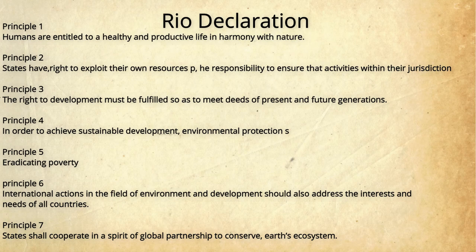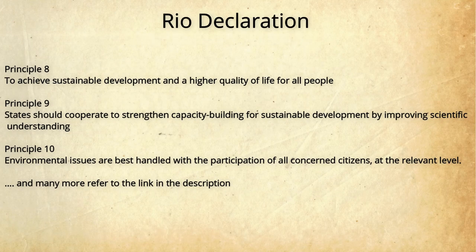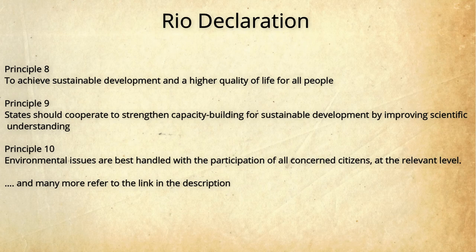The fifth principle of the Rio Declaration looked into the task of eradicating poverty. The sixth addressed special situations of developing countries that are vulnerable and need help with environmental issues. The seventh focused on the spirit of global partnership to protect and restore the health of the earth's ecosystems. The eighth aimed to achieve sustainable development and a higher quality of life. The ninth states that countries should build capacity for a sustainable environment through scientific knowledge and exchange of science and technology. The tenth principle concerns citizen participation in decision-making.